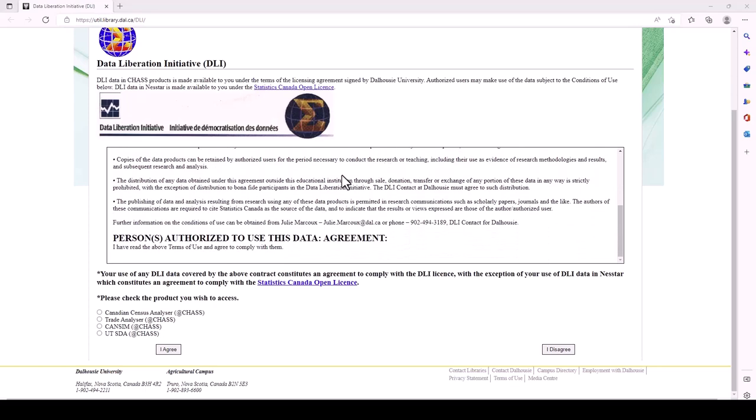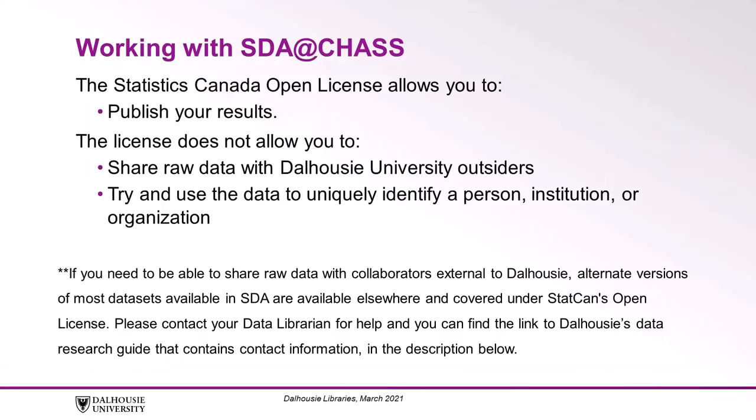Take a read through the Data Use License, which does apply to microdata retrieved from SDA. You'll notice that you're allowed to publish your results, but you can't share raw data with Dalhousie University outsiders, and you can't try to use the data to uniquely identify a person, institution, or organization. If you need to share raw data with collaborators external to Dalhousie, alternate versions of most datasets available in SDA are available elsewhere and covered under StatCan's Open License, which allows this kind of use. Please contact your data librarian for help with this — you can find the link to Dalhousie's data research guide with contact information in the description below.